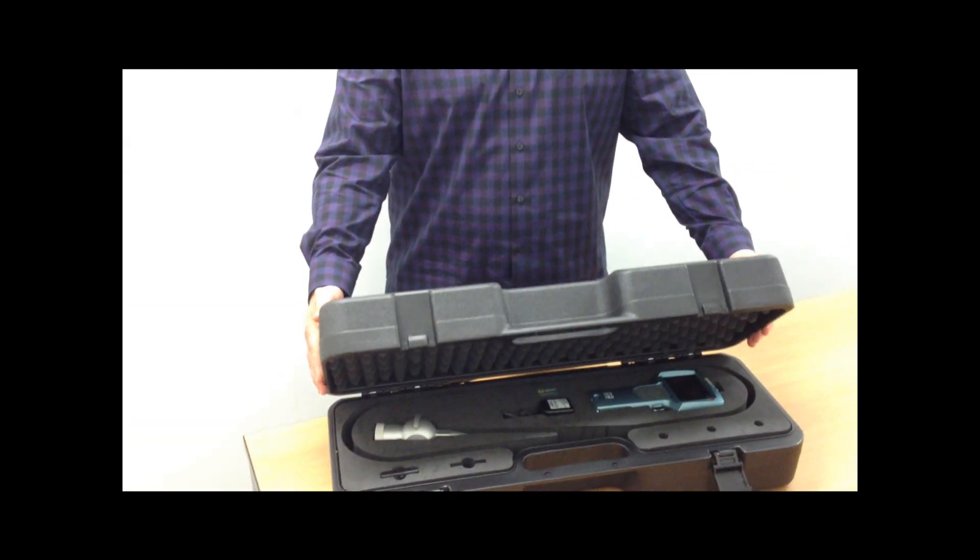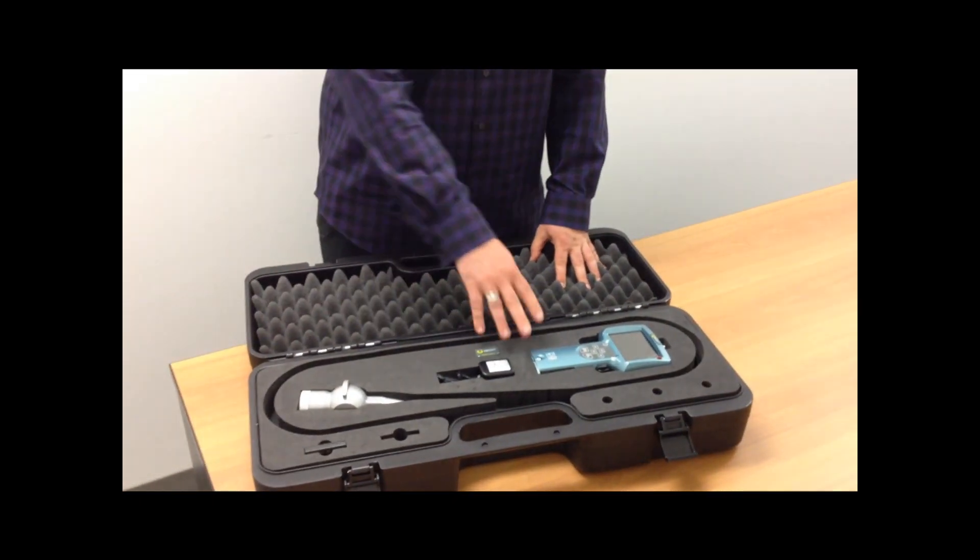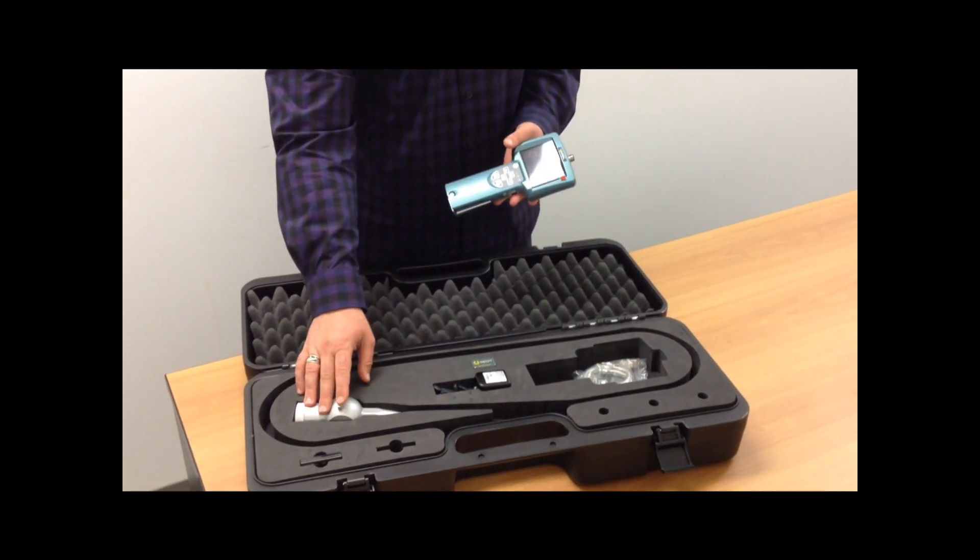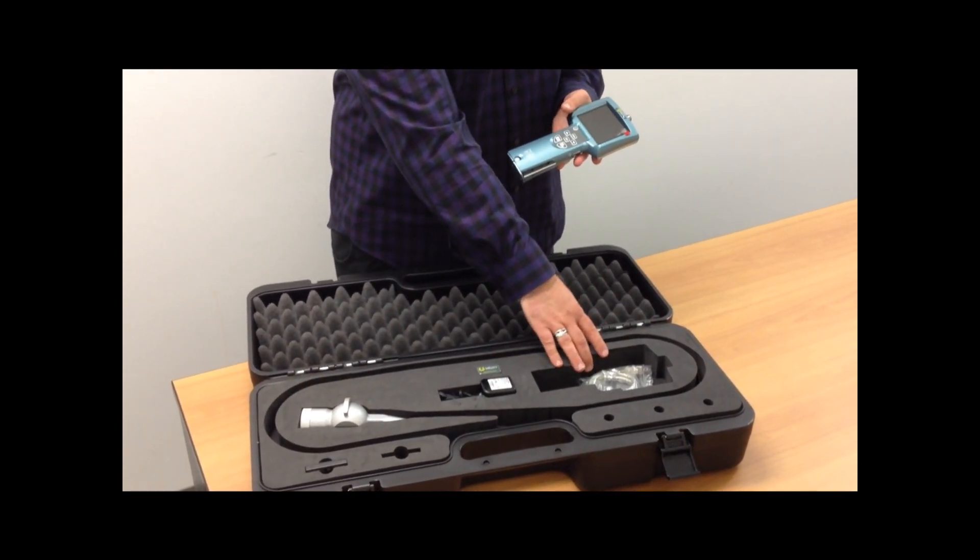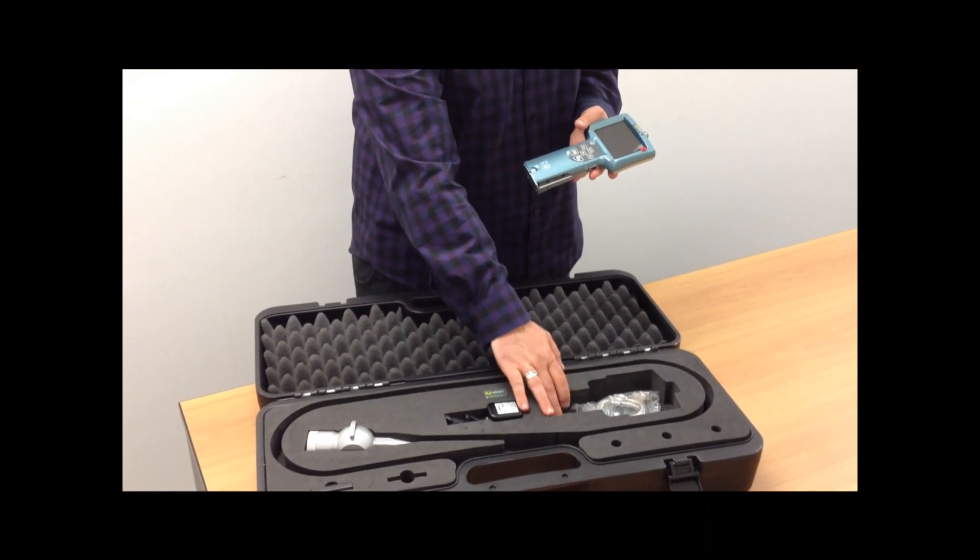Inside the case you'll get a padded carrying case for your video scope. You'll have a monitor, portable monitor unit, as well as a probe. There's also a power adapter, a USB cable to transfer captured images and video, and a lens cleaning kit.